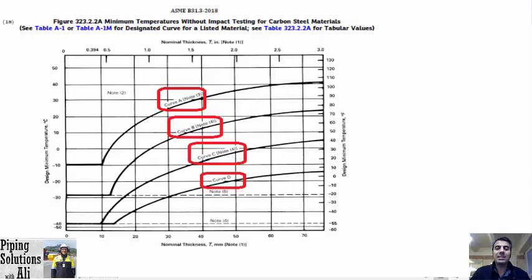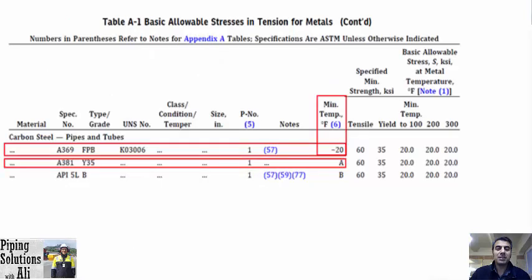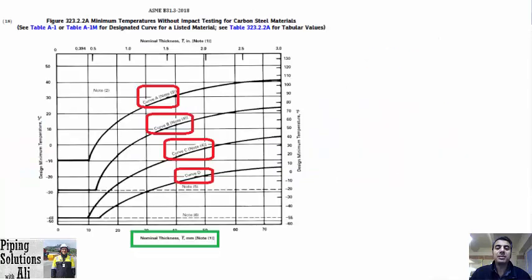Another method is specifying a character or designation — A, B, C, or D — that refers to curves in figure 323.2.2A. For example, the minimum temperature of ASTM A381 grade 35 is specified by designation A, and for API 5L grade B, it is specified by character B. For these cases, in addition to temperature, the thickness of the material is also important for specifying the requirement for impact testing.